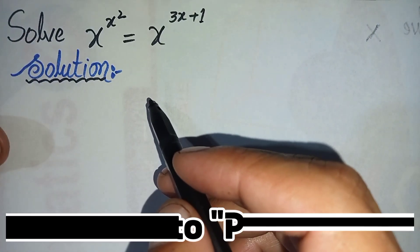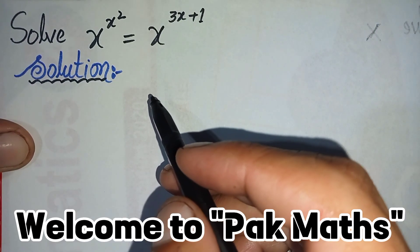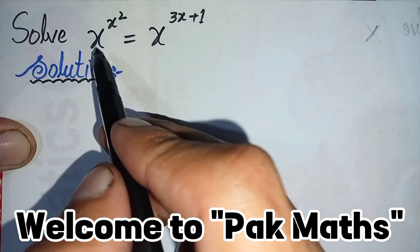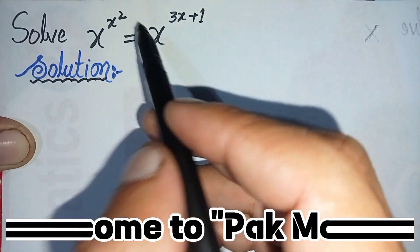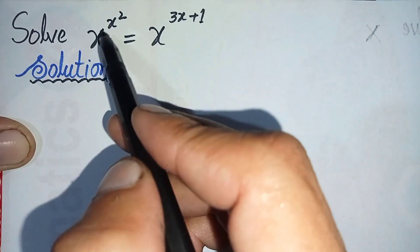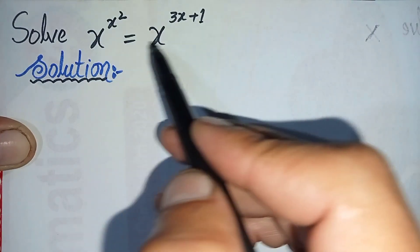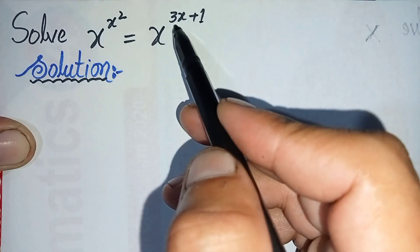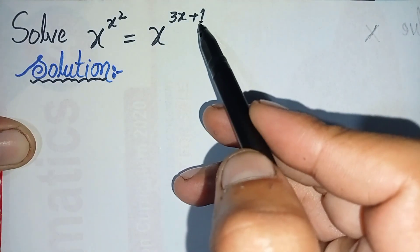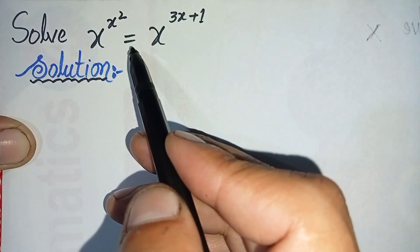Hello everyone, welcome to ParkMas. In this video I'm going to solve this nice exponential math problem: x raised to the power x² is equal to x raised to the power 3x plus 1.